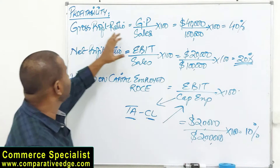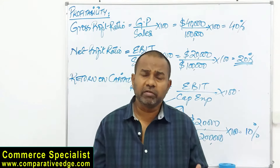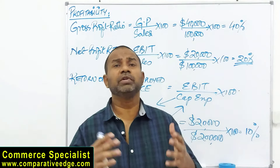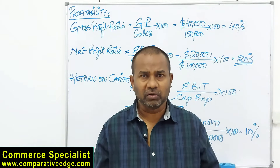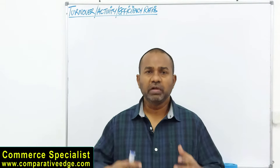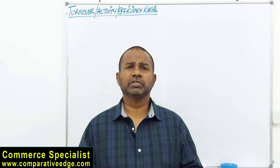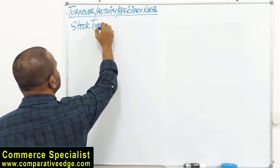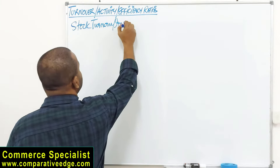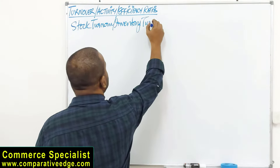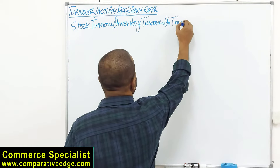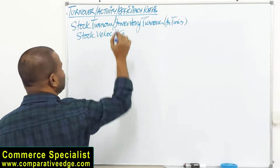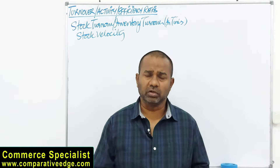Having covered profitability and liquidity ratios, we now look at efficiency — also called activity ratios or turnover ratios. The first is stock turnover, also known as inventory turnover or stock velocity.